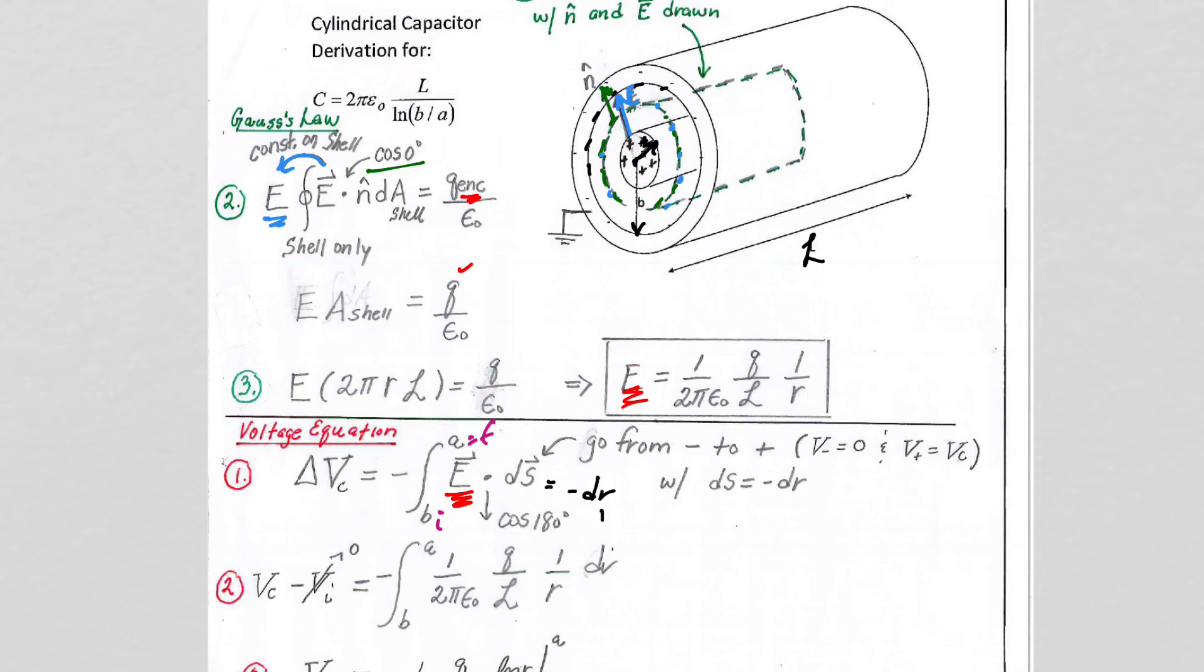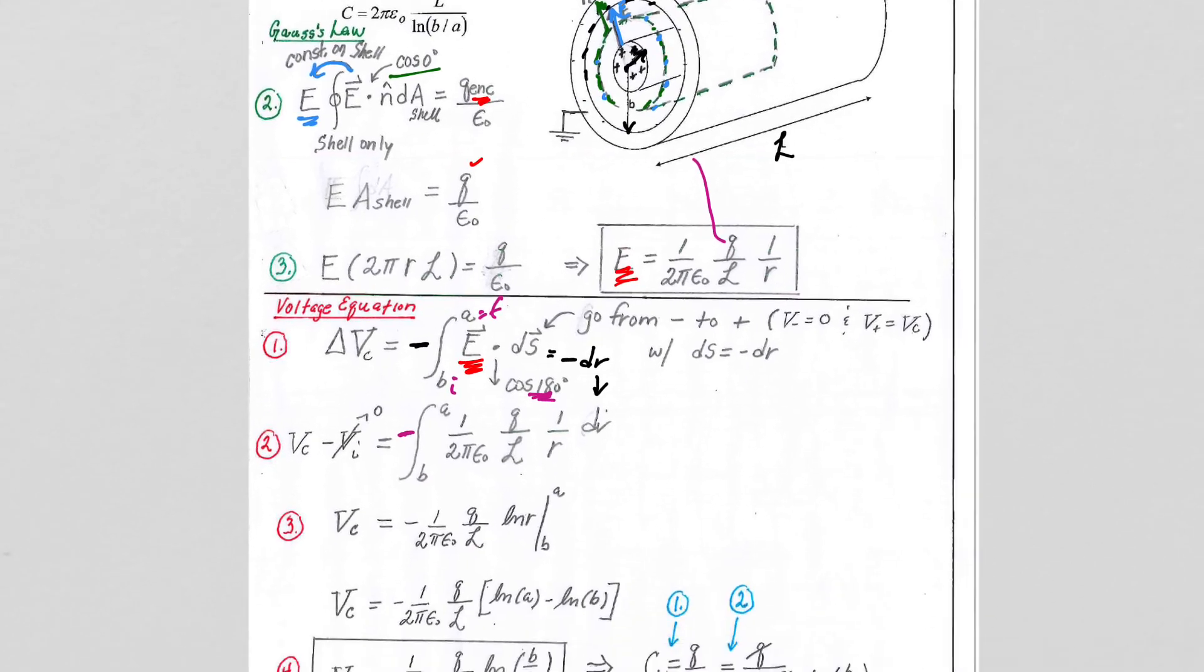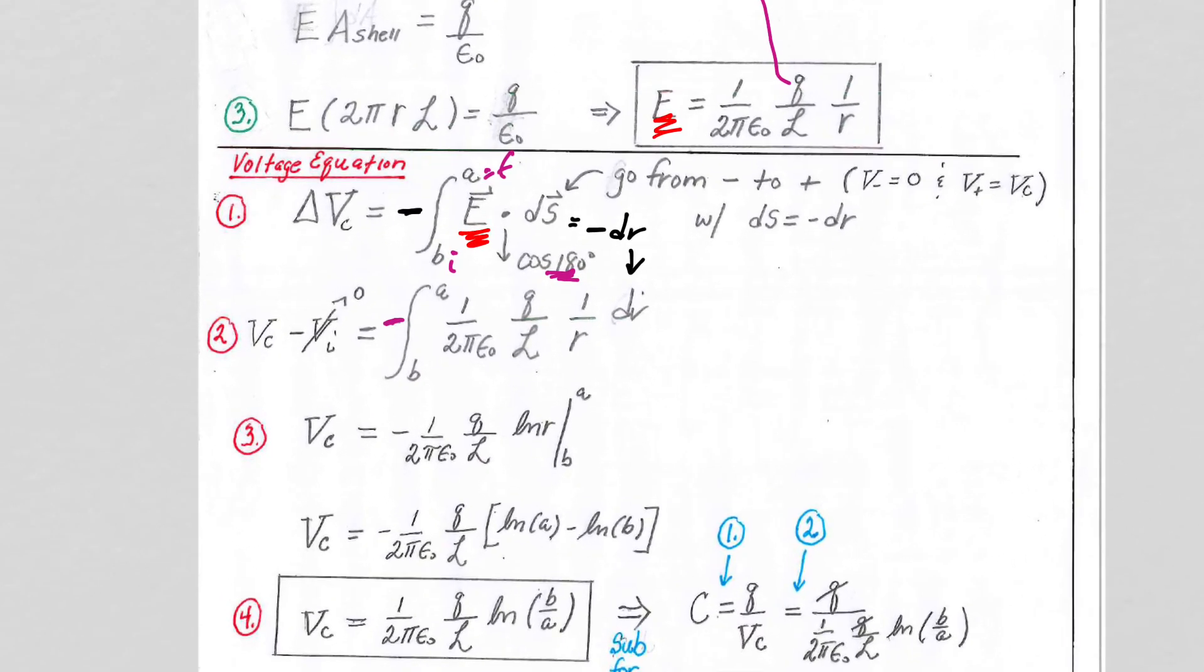The ds is of course equal to the negative dr. When we substitute it in here, those two negatives make the positive. We're left with an additional cosine of 180 here because we're integrating backwards. So that cosine, that negative is this negative, and we are left to integrate a 1/r dr. So everything else comes out right, this is all constant that comes out of our integral.